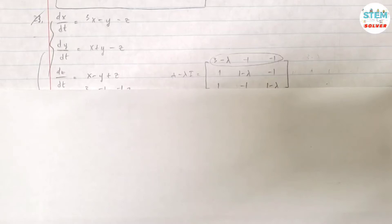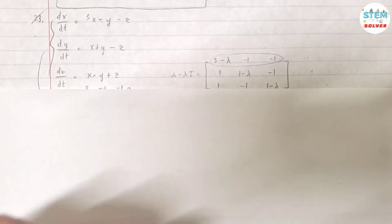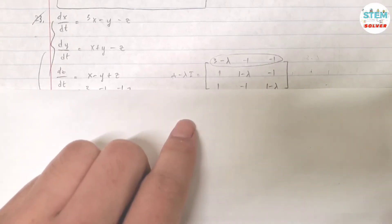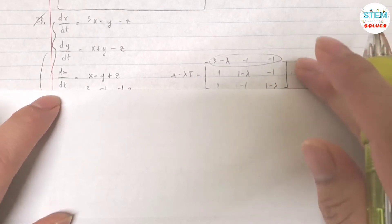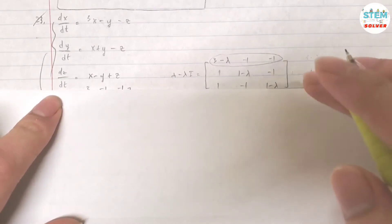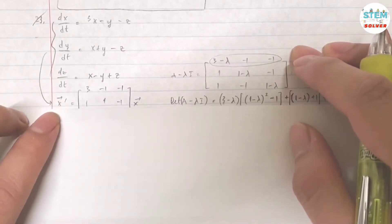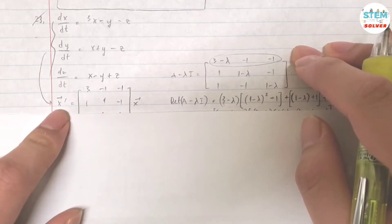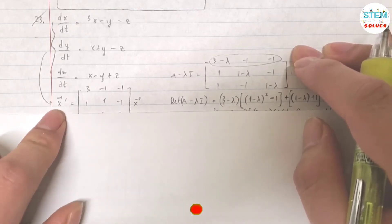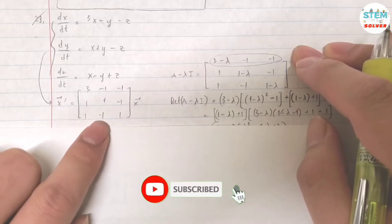So find the general solution of the given system. You are given this system of equations. First you need to put it into a standard matrix in terms of vector x prime, which is this one.